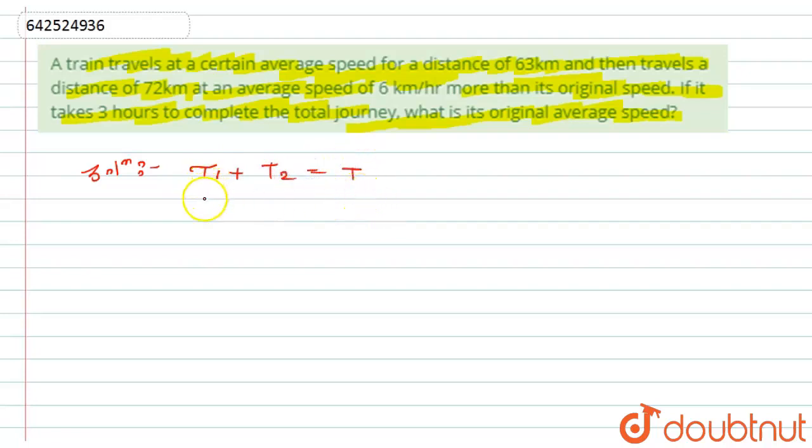Now what is T1? T1 is nothing but the time which has been taken to cover the 63 kilometers with the average speed of train.